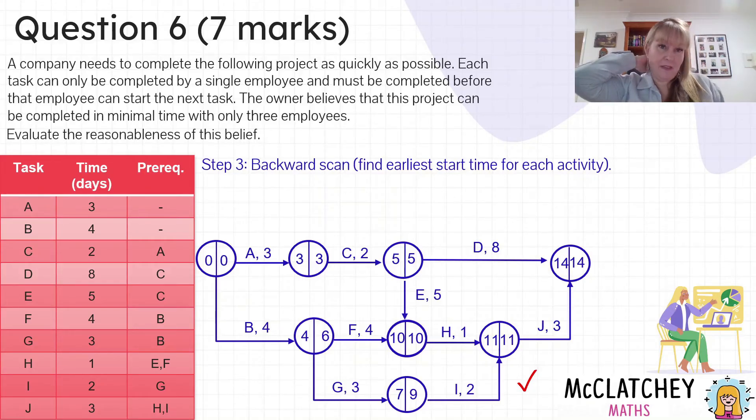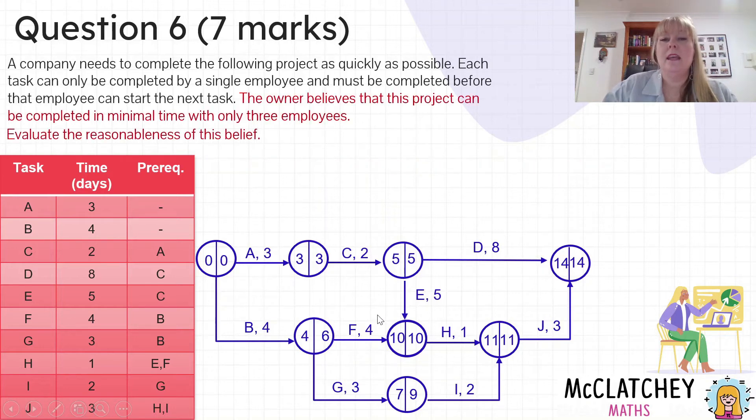Now that I've done the forward scanning and the backwards scanning, I still need to think about the question I've been asked. Can this be done with just three employees? We can see that there's three main pathways through the network. The first pathway is A, C, and D. The next pathway is B, F, H, J, and the third pathway is G and I. So we've got basically three pathways where there is something going on at the same time or in tandem with the other activities. So we need at least three employees.